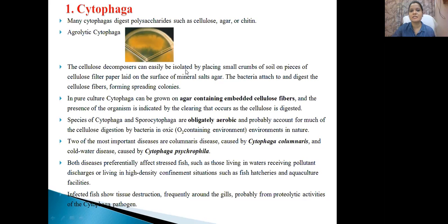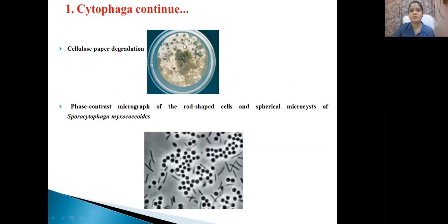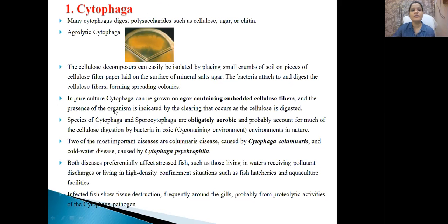The cellulose decomposers can easily be isolated by placing small crumbs of soil on pieces of cellulose filter paper laid on the surface of mineral salt agar. Bacteria attach to and digest the cellulose fibers, forming spreading colonies. In pure culture, Cytophaga can be grown on agar embedded with cellulose fiber, because cellulose is the prime requirement for the growth of Cytophaga.